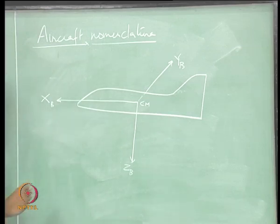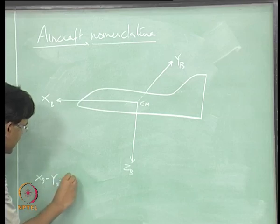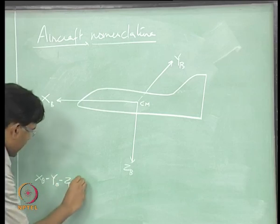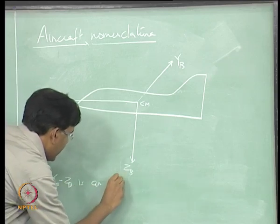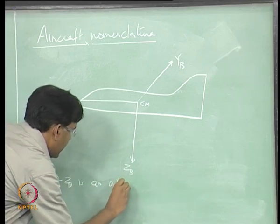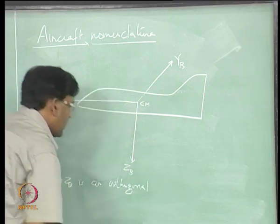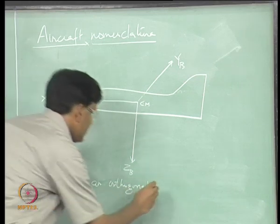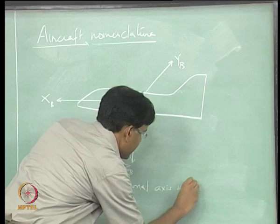Xb, Yb, Zb is an orthogonal axis system — the body-fixed axis system of the aircraft.